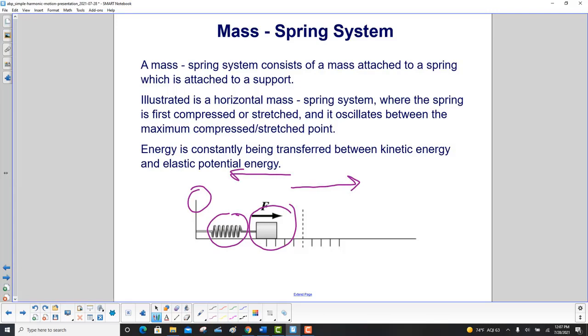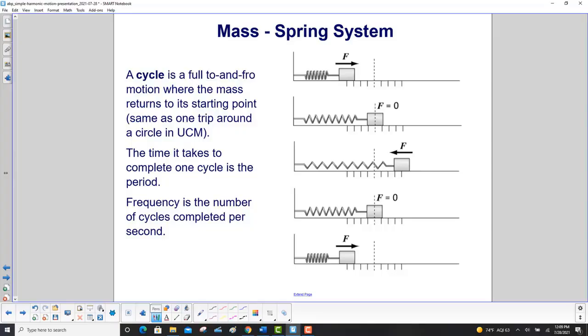Energy is constantly being transferred between kinetic energy and elastic potential energy. A cycle is a full to and fro motion where the mass returns to its starting point, same as one trip around the circle in UCM.